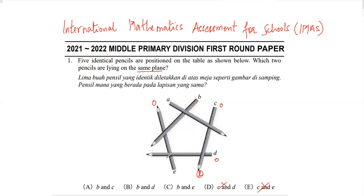B is on E, so that's not my answer either. Now checking B and D: B goes from level zero to one, and D also goes from level zero to one. So my answer is B for question one — B and D are lying on the same plane.